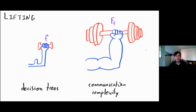Today we're going to be focusing on lifting. The intuition behind lifting is that we have one model which is easy to get strong lower bounds for, and another model for which we'd love to get stronger lower bounds. Maybe there's some procedure where if we have a lower bound for some function f for decision trees, we can extract a really nice lower bound for the much stronger model of communication complexity.